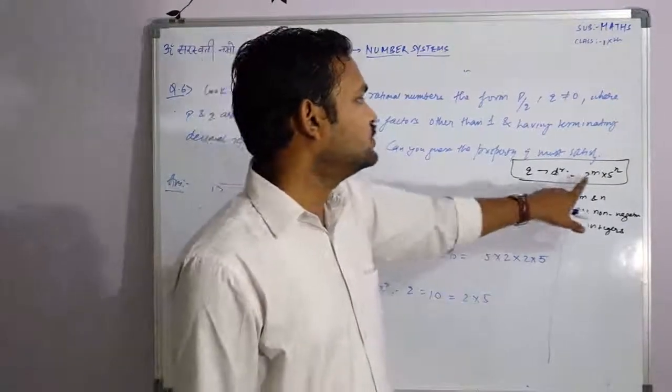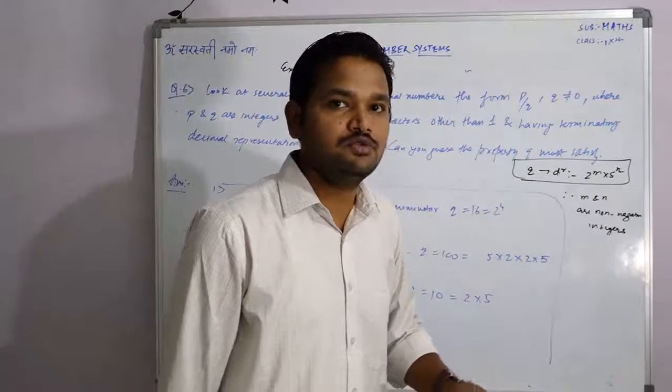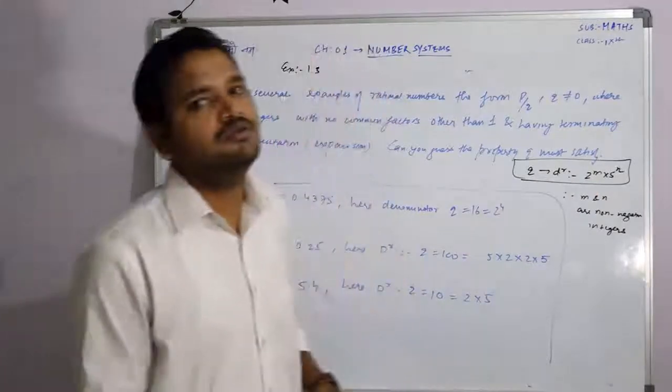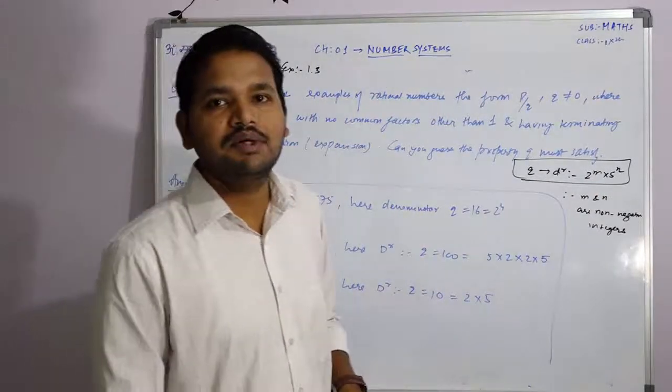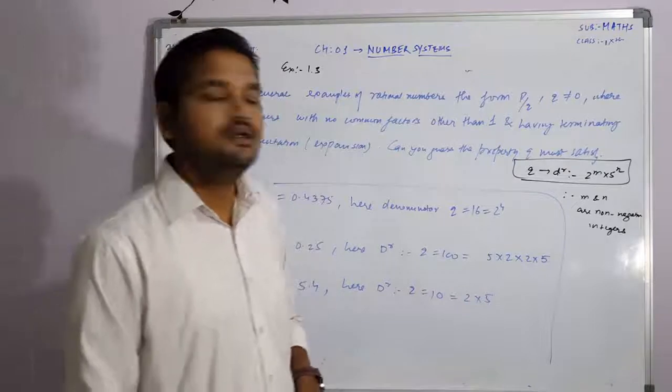So here the denominator Q has a number of times 2 raised to m into 5 raised to n in the form of expression if it is rational number. Because rational number is terminating. What is terminating?